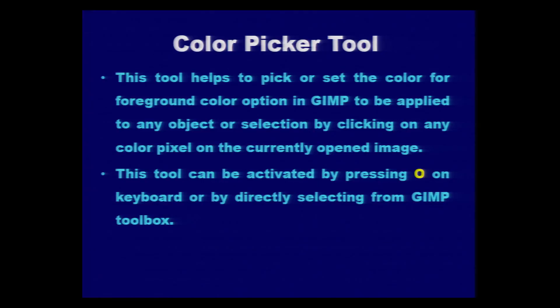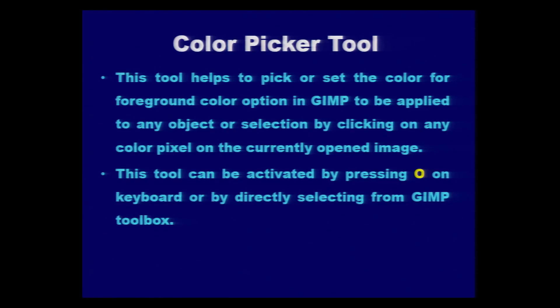The next tool is the Color Picker tool. This tool helps to pick or set the color for the foreground color option in GIMP, to be applied to any object, shape, or area of your choice. It is very simple and easy to use — you can press O on the keyboard to activate it, or directly select it from the GIMP toolbox. Normally, it sets the foreground color option using the color picker tool.